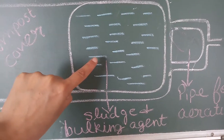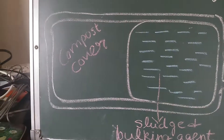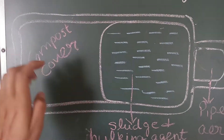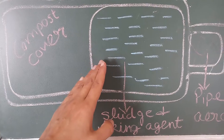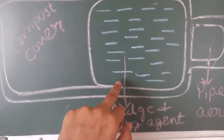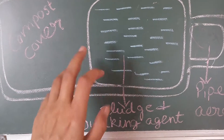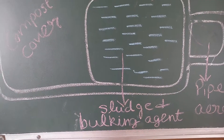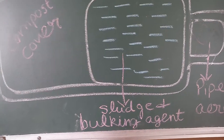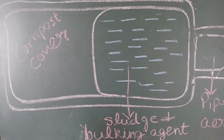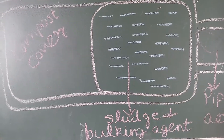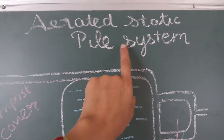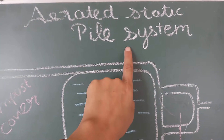A layer of compost is kept over it as a cover, for insulation and good aeration. This system takes about three to four weeks for composting and another four to five weeks for curing. This completes the first type: the aerated static pile system.